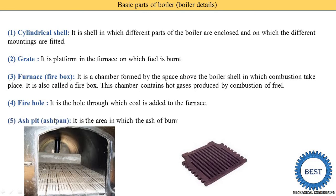Next is the ash pit, also called the ash dump. It is the area in which ash from burnt coal is collected. After the burning of coal, the residual particles that remain are known as ash — the final product of coal after combustion. The ash pit is generally installed below the grate, because ash falls down through the grate openings and is collected in the ash pit.